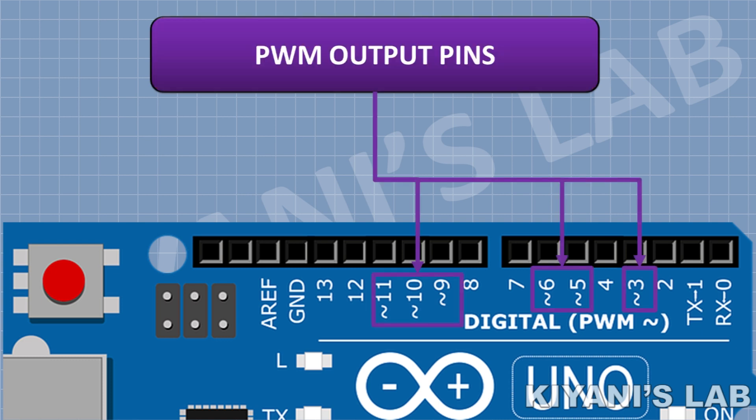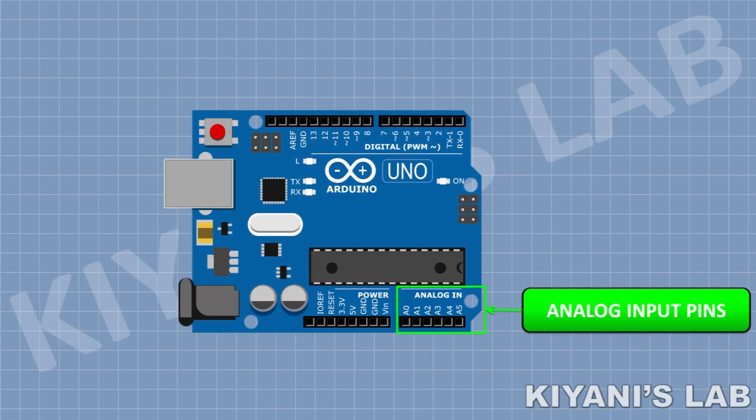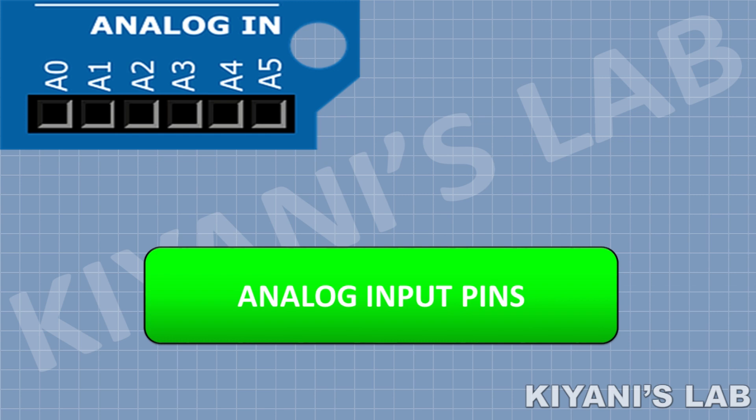Some of these digital I/O pins can be set as PWM output pins. Arduino Uno also has 6 analog pins. These are analog to digital converter pins. We can apply 0 to 5 volt analog signal to these pins.